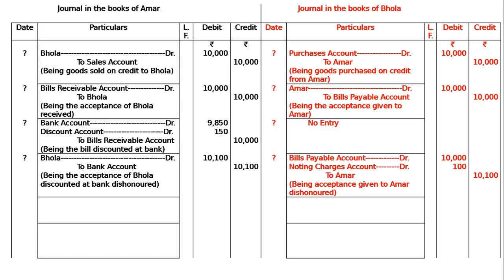Bhola gives a fresh bill for 2 months. Ammar pays his banker Rs.10,000 plus Rs.100 expenses, totaling Rs.10,100. In the books of Ammar: Bank account debited to Cash account. Interest will be due for Rs.150, and Bhola gives a fresh bill for 2 months to Ammar for Rs.10,250, which is met at maturity. In the books of Bhola: Interest account debited to Ammar, being interest due to Ammar, Rs.150.